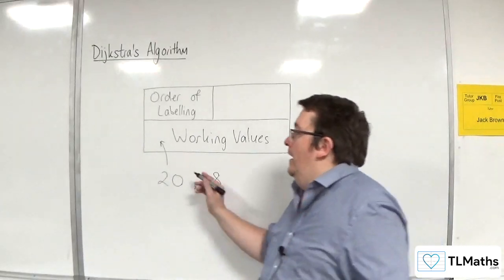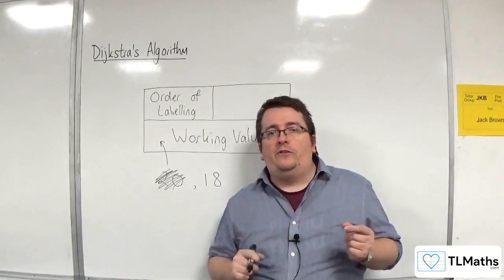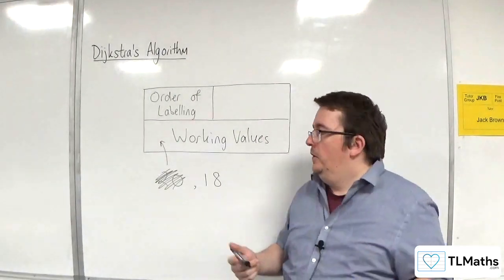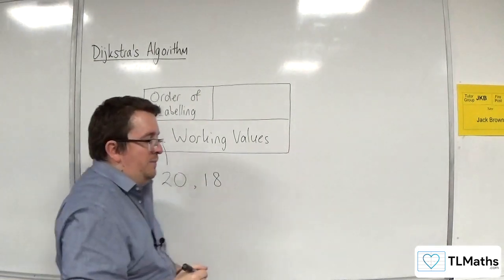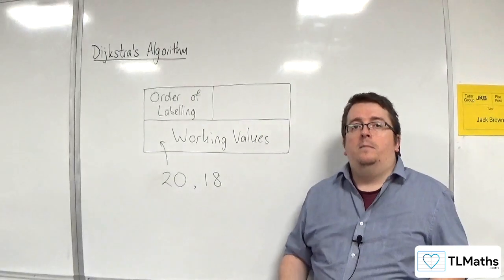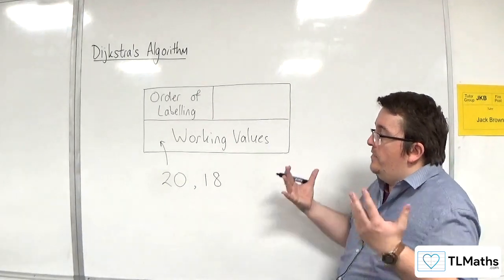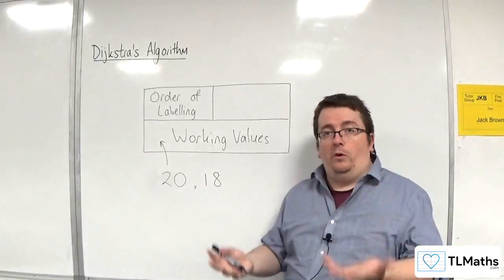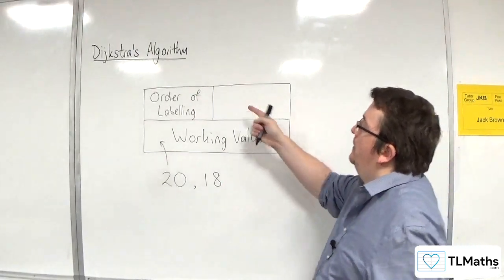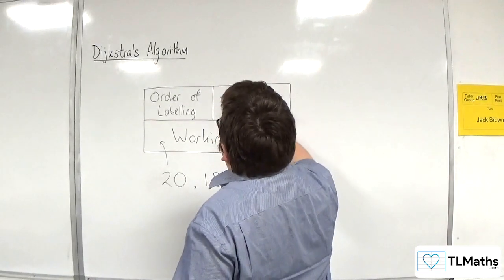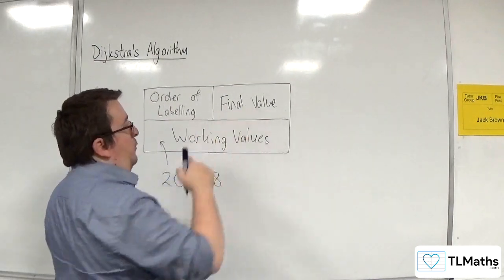You will see in mark schemes that they don't cross through the values. The reason for that is that we want to make sure that the numbers you're putting into that box are legible. What we want to avoid is people scribbling out or erasing working values that have to be there. If you put a single line through the 20, it should still remain legible. But you might just want to leave it alone. Once you've got your smallest working value, that goes up into the top right as your final value.